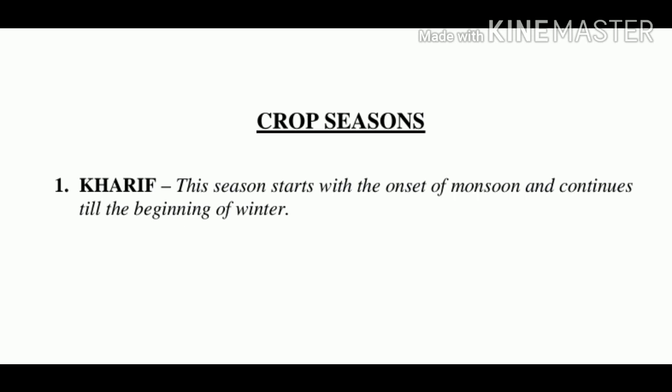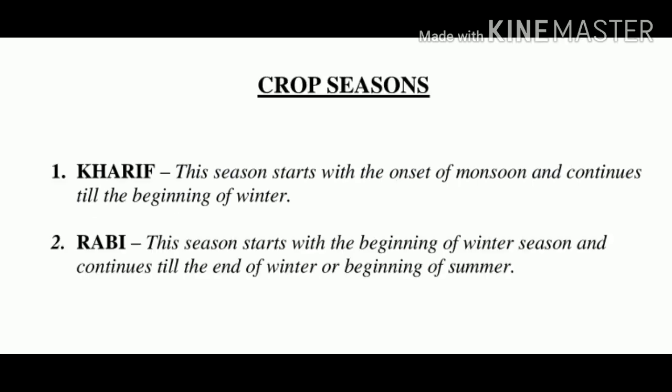The second season is Rabi. This season starts with the beginning of winter and continues till the end of winter or beginning of summer. Major crops of this season are wheat, barley, jowar, gram and oilseeds such as linseed, rape and mustard.